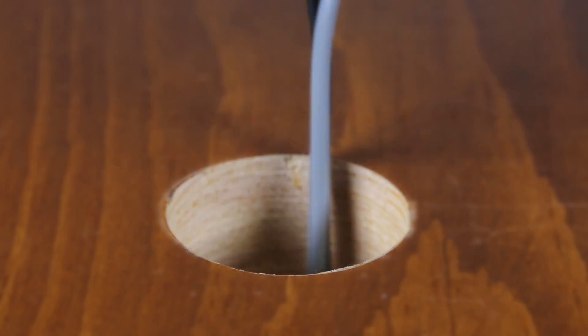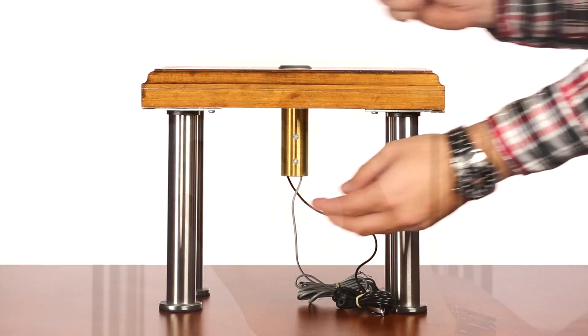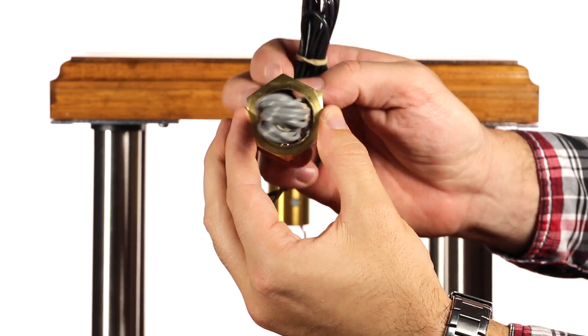Feed the cables through the hole until the microphone is sitting comfortably on the table. Feed the cables through the brass nut.